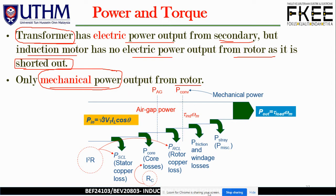Down here is the power flow of the machine. We start with the input power P_in, shown in this yellow box. The formula is: P_in = √3 · V_T · I_L · cos θ, where V_T is the terminal voltage, I_L is the line current, and cos θ is the power factor. This is how we calculate the input power of the induction machine, represented in electrical terms.